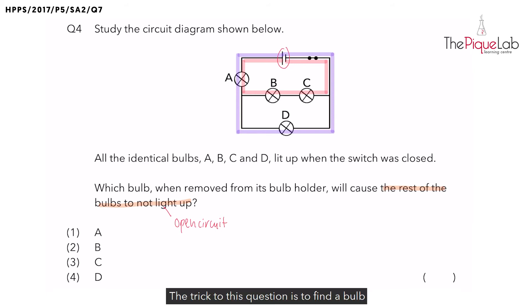The trick to this question is to find a bulb that sits on both pathways so that when we remove this bulb, we create a gap in both the pathways. Now which bulb sits on both the pathways that we have just highlighted?